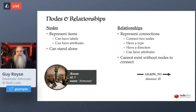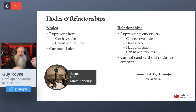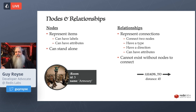Then you've got relationships between those nodes. They represent the connection between two nodes — only two nodes. They have a type, such as 'contains', or on social media it might be 'a user likes a post'. They have a direction. They can also have attributes. But most importantly, they cannot exist without nodes to connect — two points determine a line, and if you don't have two points, the line disappears. If you delete a node, any relationships to it and their associated data will go away.